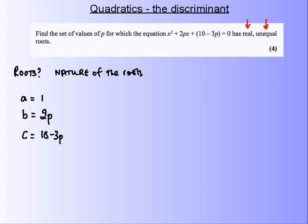We are looking for a case of the discriminant b squared minus four ac to be greater than zero. Let me go ahead and put these in. Two p squared, four a is one, c is ten minus three p. I want this to be greater than zero.